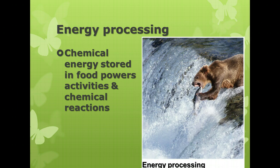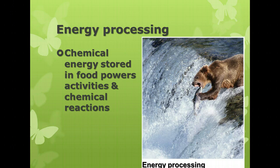Next, we have energy processing. There is chemical energy that is stored in food, and it's what gives your cells and your organs the energy to power the activities and chemical reactions that go on within your body. That's the same whether you're made of trillions of cells or whether you're a single cell. There has to be chemical energy that is stored and used by the organism for its various activities. We will spend some time talking about how this energy is stored, processed, and released.